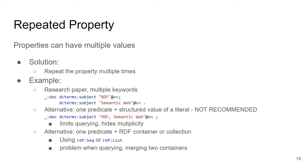The repeated property pattern emphasizes that you can have multiple RDF triples where the subject and predicate are the same but the object differs — meaning a property has multiple values for one subject. This pattern also emphasizes that you should not invent your own lists within literals unless they are of a known data type such as xsd:date or xsd:dateTime. For multiple values, use separate values and decide whether to preserve ordering — if so, use an RDF list; otherwise, just use multiple RDF triples with the same subject and predicate.